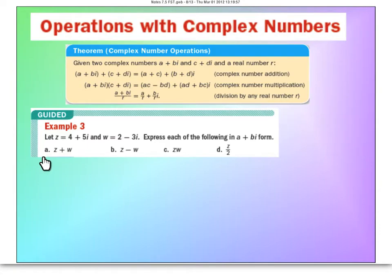Let's look at A and B. Letter A here wants us to take the complex number z and add to it the complex number w. So the number for z is 4 plus 5i, and the number for w is 2 minus 3i.